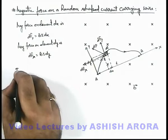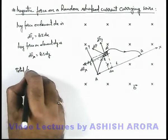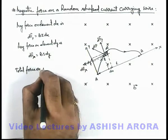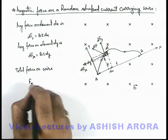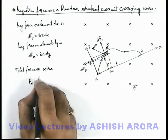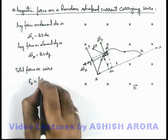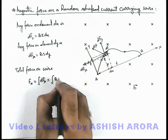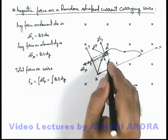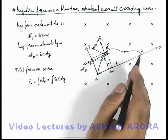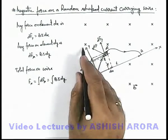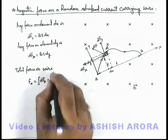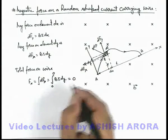Total force on wire: force in x direction is the integration of dFx, which is integration of Bi dy. If we wish to integrate it from point A to B, then y coordinate limits will be from zero to zero, so total force will come out to be zero.